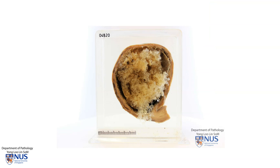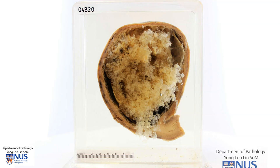In summary, we're looking here at an example of a complete hydatidiform mole. This is due to abnormal fertilization, which causes abnormal trophoblastic tissue in the form of chorionic villi that are very swollen, with accompanying trophoblastic proliferation. A molar pregnancy may carry with it a risk of persistent gestational trophoblastic disease or recurrent molar pregnancies. Thank you.